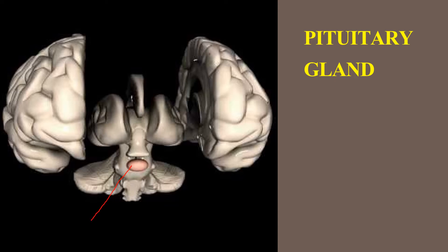The pituitary gland looks like a peanut shape. This gland is suspended from the floor of the third ventricle. It is a very small gland, but it controls many other endocrine glands. Its secretion is controlled by the hypothalamus. The anteroposterior diameter is about 8 mm, the transverse diameter is about 12 mm, and the weight of the gland is 500 to 600 mg.